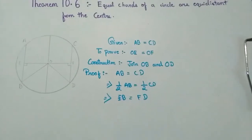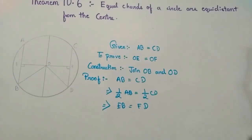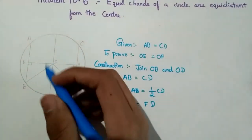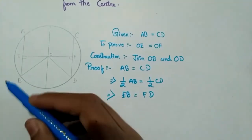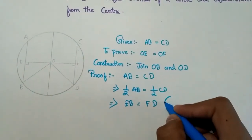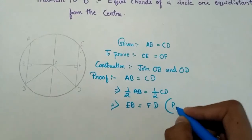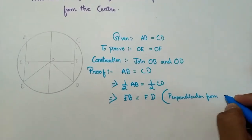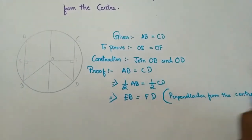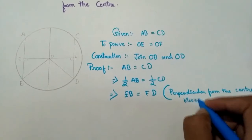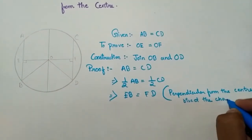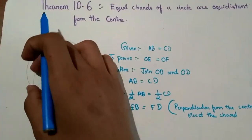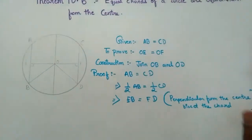Half of AB is EB and half of CD is FD, because from a previous theorem we know that the perpendicular from the center bisects the chord. So using that reason — perpendicular from the center bisects the chord — we get that EB is equal to FD.